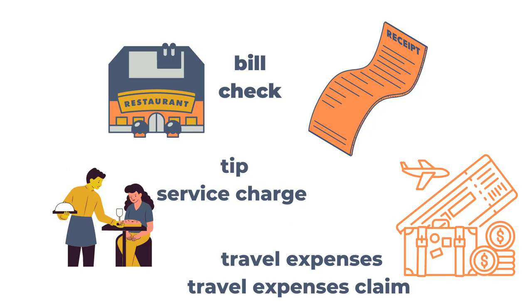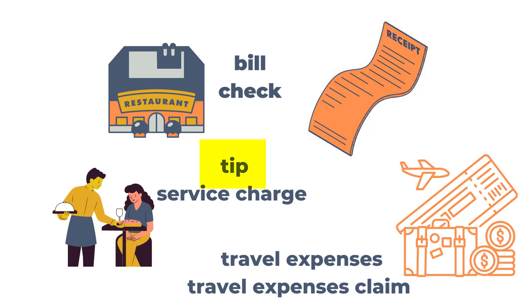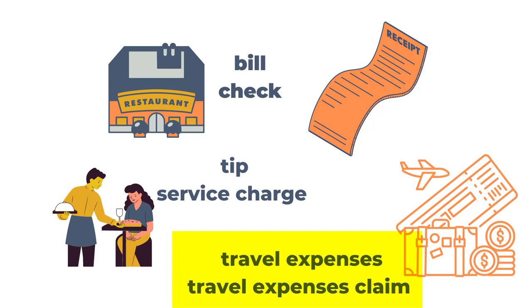If you're travelling on business, you'll go to restaurants. In the UK, you'll ask for a bill; in the States, you'll ask for a check — more or less understood in both areas. When you pay the bill or check, by credit card or in cash, you will get a receipt, and if you're on business you need to keep all your receipts. If you've really liked the service, you'll give a voluntary tip to the serving staff. Many restaurants these days put a percentage — maybe 8% or 10% — on the bill as a service charge. When you travel, airline tickets, restaurant bills, hotel bills, and taxi receipts will all be your travel expenses, and when you return you'll have to make a travel expenses claim.